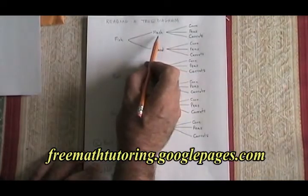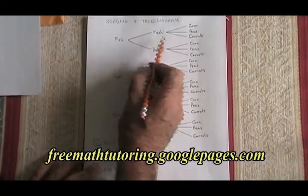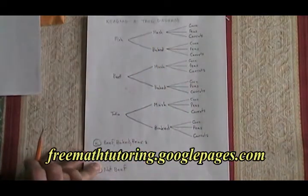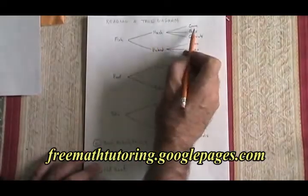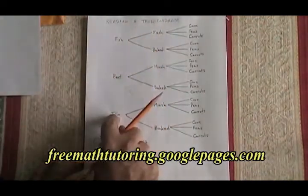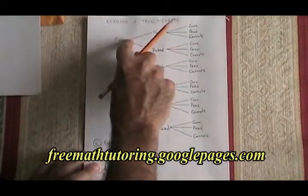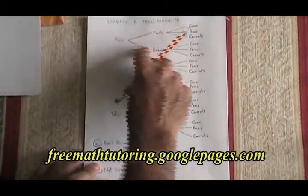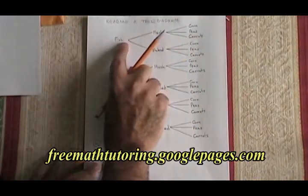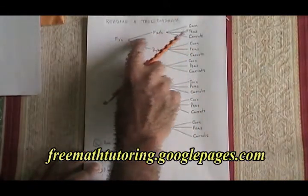The student also chooses a potato, either mashed or baked, and a vegetable: corn, peas, or carrots. The way it's made is to take the main dishes and make branches leading out of them. From the main dish, we have branches that go to the different types of potato.